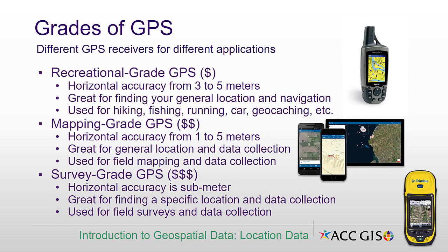Survey grade GPS is all about accuracy. It typically is accurate to sub-meter or maybe even sub-decimeter. It's great for finding a specific location, and you can also often use it for collecting attributes as well. Professionals typically use survey grade GPS for conducting field surveys.